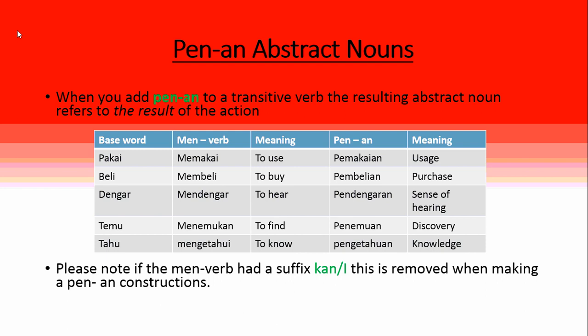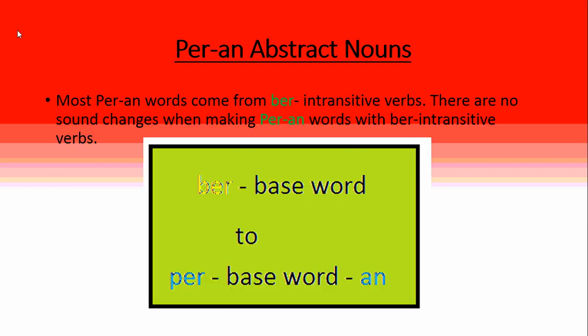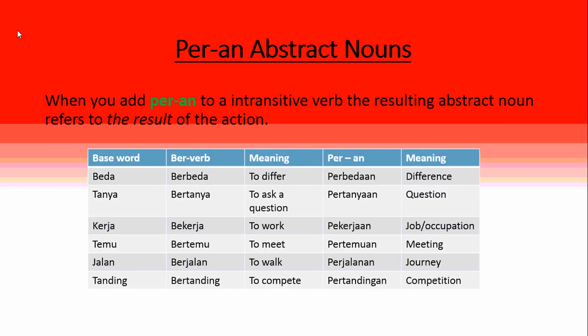Most per-an abstract nouns come from ber transitive and intransitive verbs, and there is no sound change when making per-an words with ber intransitive verbs. The pattern is: ber plus the base word changes to per plus base word plus an. For example, beda becomes berbeda meaning 'to differ,' and perbedaan is 'the difference.' Tanya — bertanya means 'to ask a question,' and pertanyaan is 'the actual question itself.'